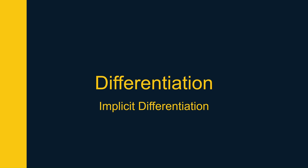Implicit differentiation is a section that causes some confusion, but that could be because you're not comfortable with the chain rule. So first make sure you're happy with differentiating functions using the chain rule, and then take a look at implicit differentiation.